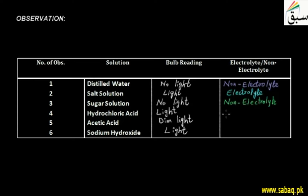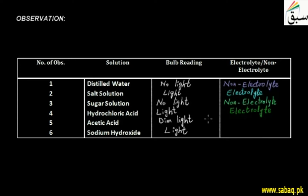When hydrochloric acid — a strong acid — is dissolved in water, it gives hydrogen ions and chloride ions. Ions are available, so the light bulb gives bright light. This is an electrolyte. For acetic acid, it gives dim light, meaning it is an electrolyte but a weak electrolyte.